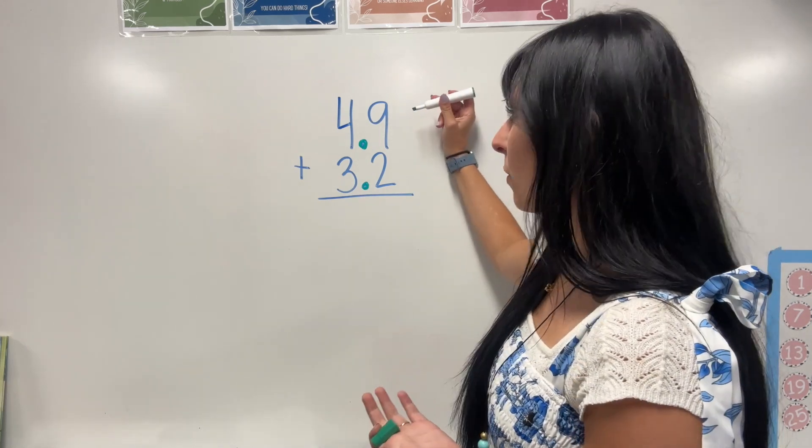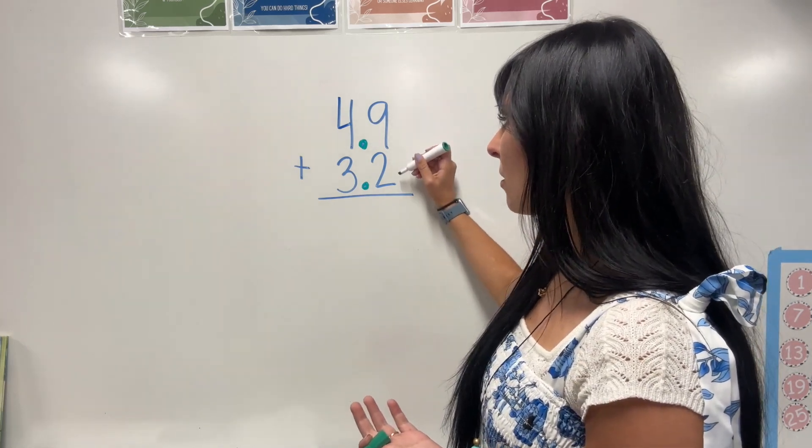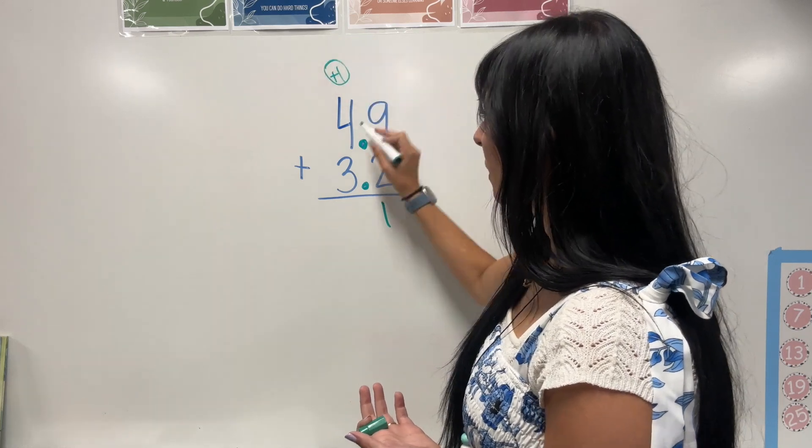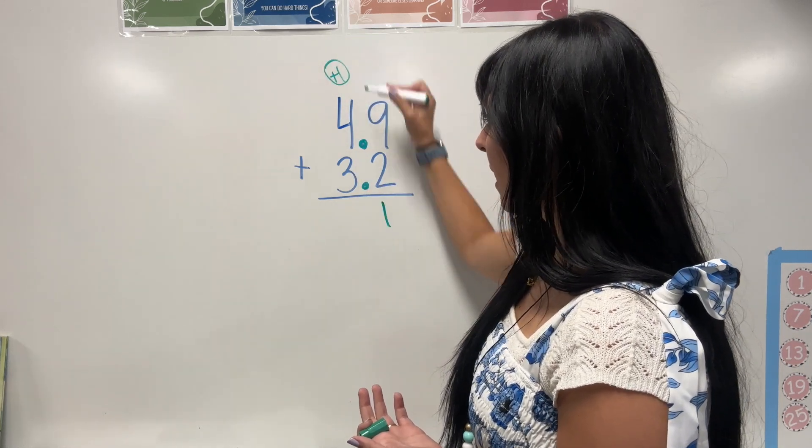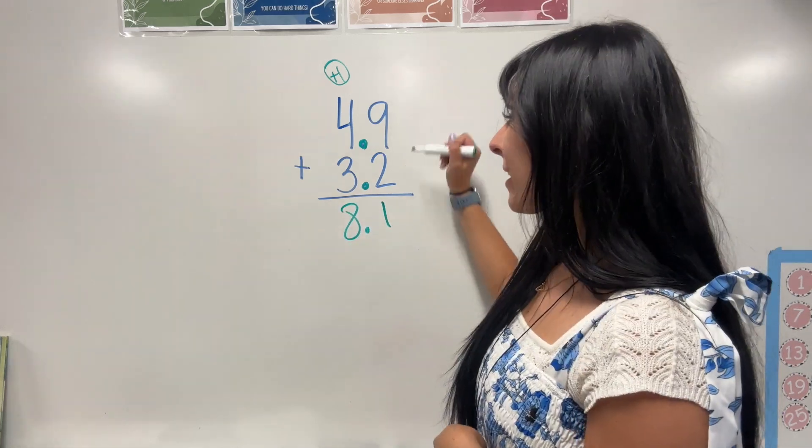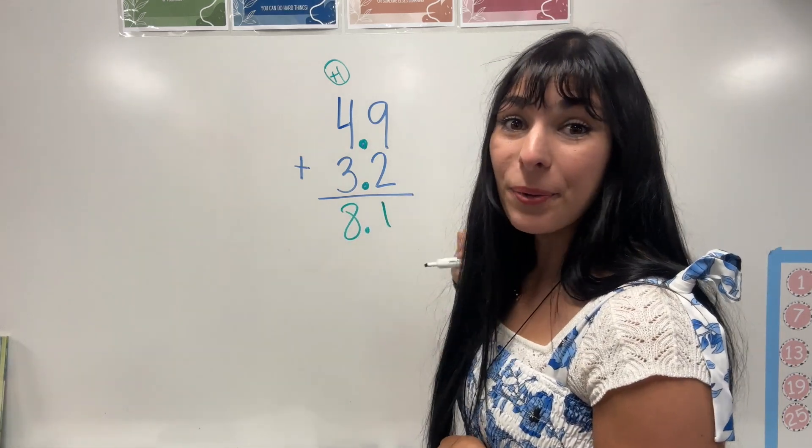So now these are aligned, I'm just going to add like normal. So 9 plus 2, 9, 10, 11, carry that plus 1, 3 plus 1 is 5, plus 3 is 8, and you bring down that decimal. So 4.9 plus 3.2 equals 8.1.